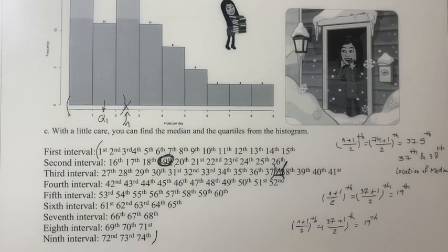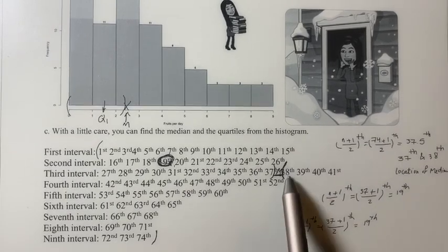37 plus 1 divided by 2, because we want the midpoint for this data set. Again, we have 19. So 19 from where? From here, from observation number 38.